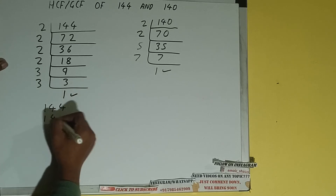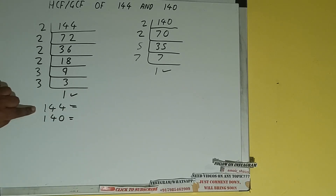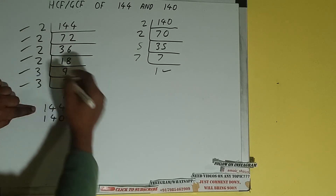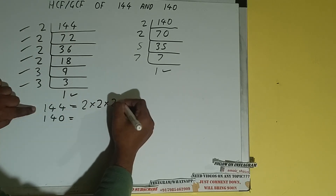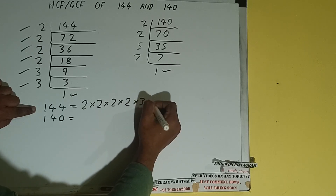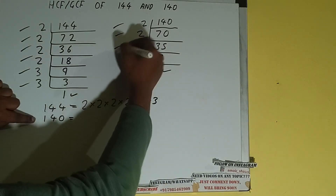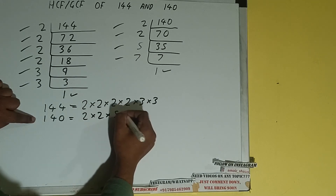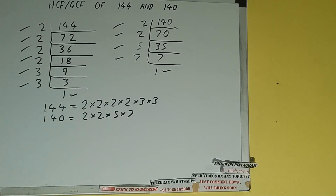Now we write down each number with their respective prime factors. For 144, the prime factors we got are: 2, 2, 2, 2, 3, 3. For 140, the prime factors we got are: 2, 2, 5, 7. The next thing we need to do is circle out the common prime factors among the two.